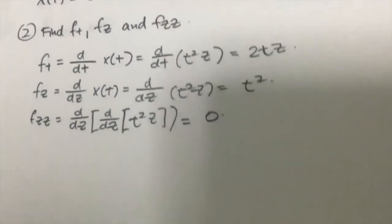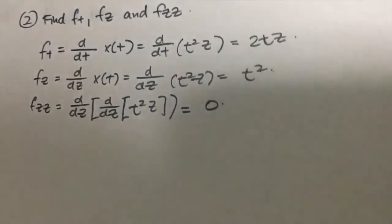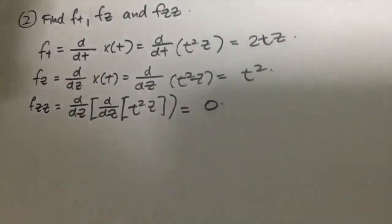Okay, so now I find my f_t, f_z, f_zz. I got all this formula, so my f_t is 2tZ, my f_z is t squared, and my f_zz is 0.